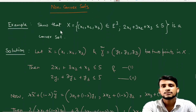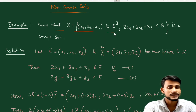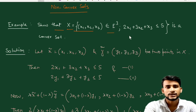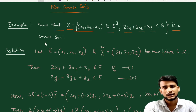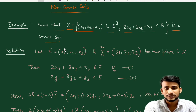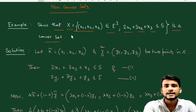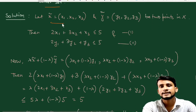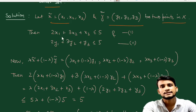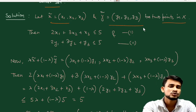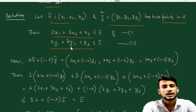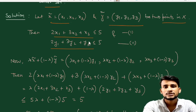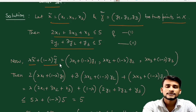Let's take an example. Let X = {(x1, x2, x3) in 3-dimensional Euclidean space such that 2x1 + 3x2 + x3 ≤ 5}. We need to show this is a convex set. We take any two points x and y from X and check whether their convex combination also lies in X. Since both points belong to X, they each satisfy the given condition.